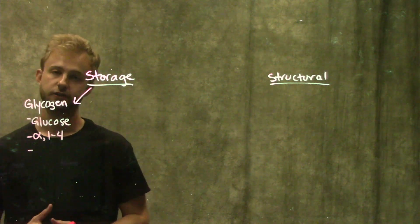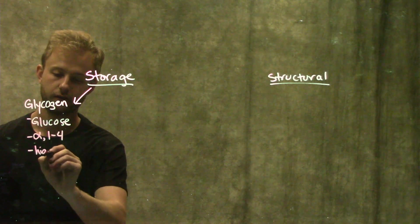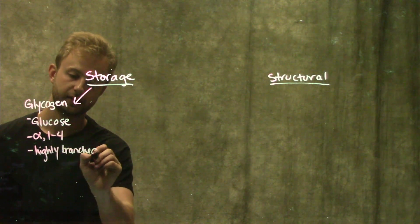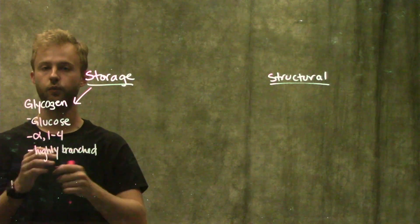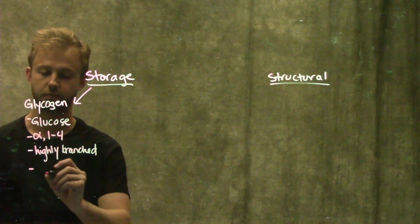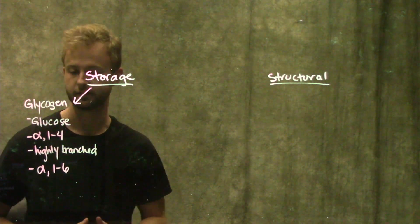Glycogen is a very highly branched polysaccharide. At these branch points where different branches are coming off the main chain, we have a different kind of glycosidic bond, which would be an alpha 1,6 glycosidic bond.